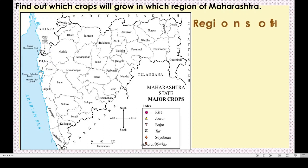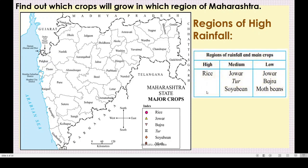In high rainfall areas, we grow rice, because it is a Kharif crop, also called Jirayati crop. In medium rainfall receiving areas, we grow jawar, toor, and soya bean. And in low rainfall areas, we grow jawar, bajra, and moth beans.